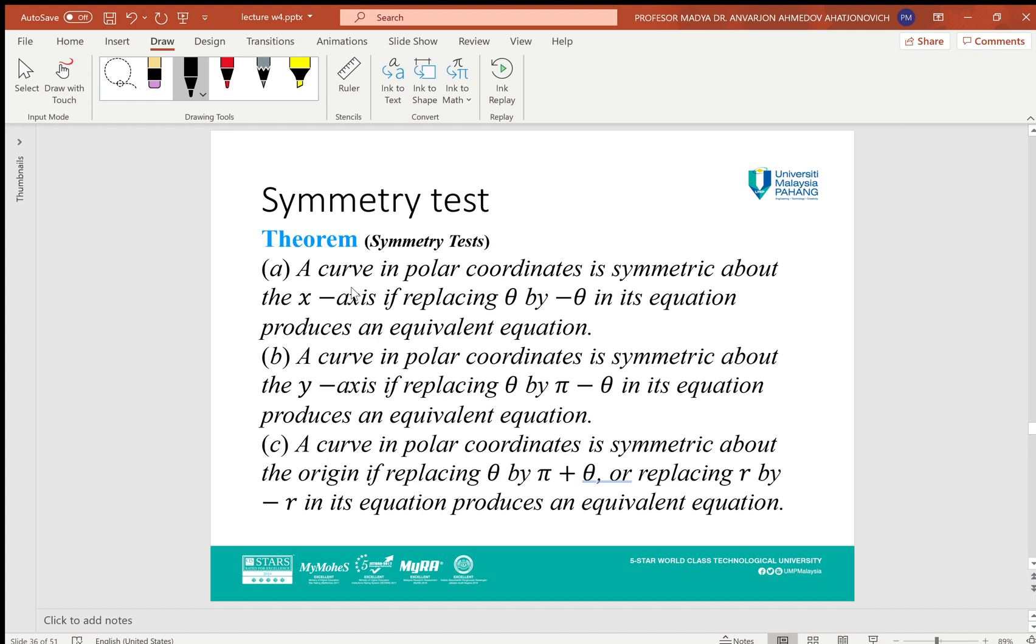Case B: A curve in polar coordinates is symmetric about the y-axis if replacing θ by π - θ in its equation produces an equivalent equation. Case C: A curve in polar coordinates is symmetric about the origin if replacing θ by π + θ, or replacing r by -r in its equation produces an equivalent equation.